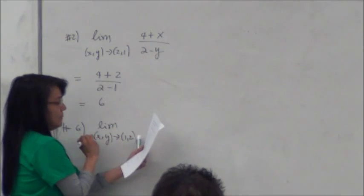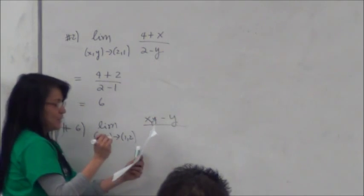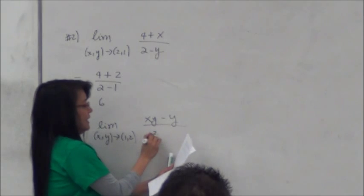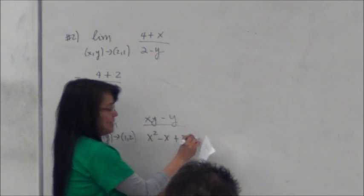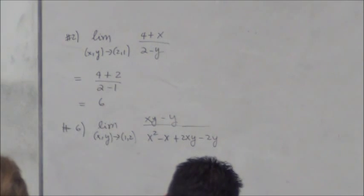If I have the limit as x, y approaches 1, 2 of xy minus y over x squared minus x plus 2xy minus 2y.